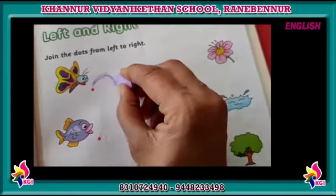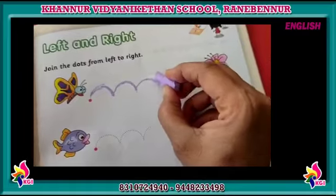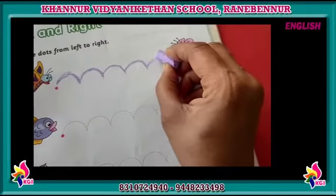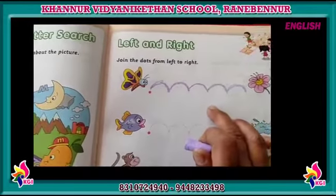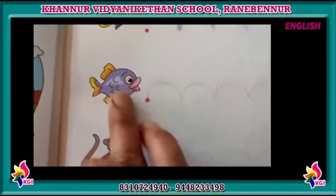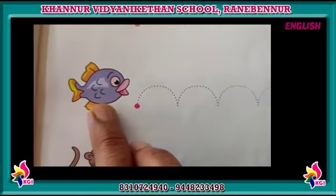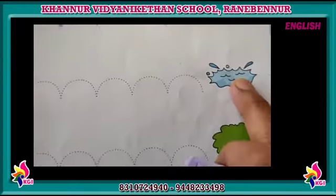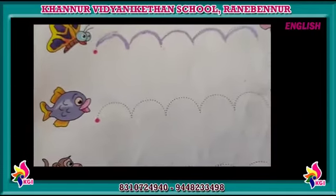Join the dots from left to right. Then what is this? Wow, this is fish. Here for fish. And what is this? This is water. Where does the fish live? Fish lives in water.